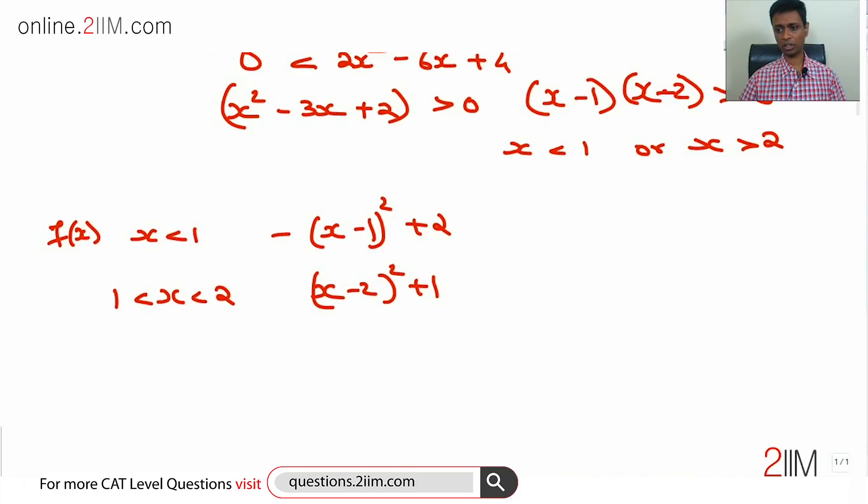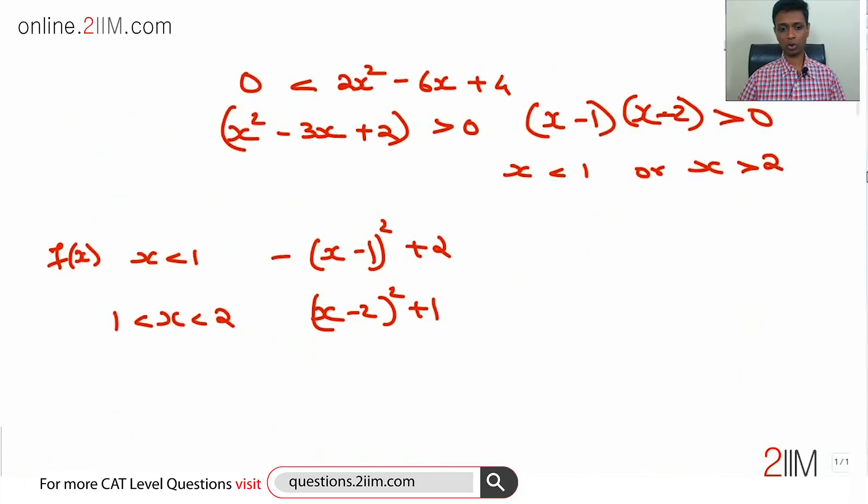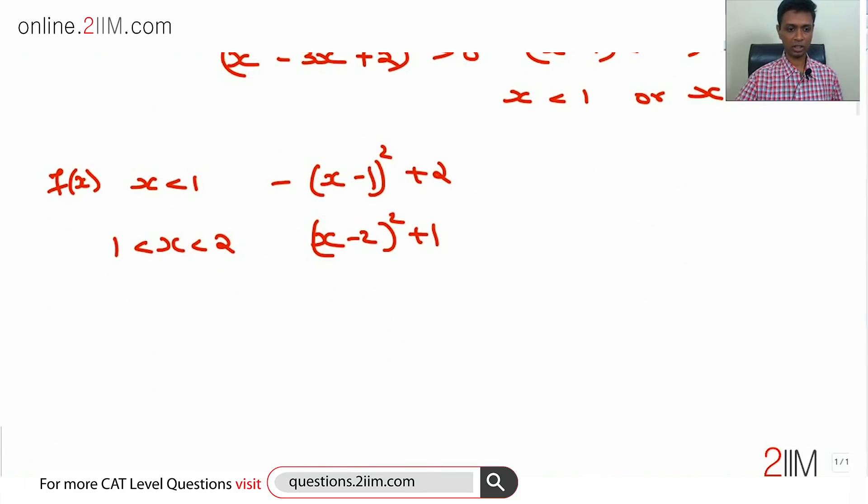Just check this, that is indeed the case: (x-2)² + 1. When x is greater than 2, it is again -(x-1)² + 2.